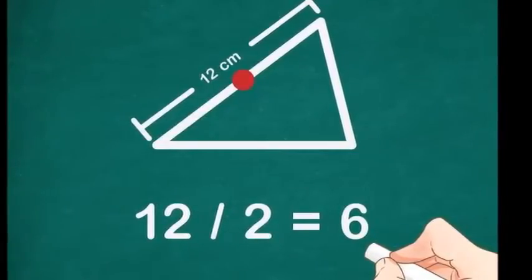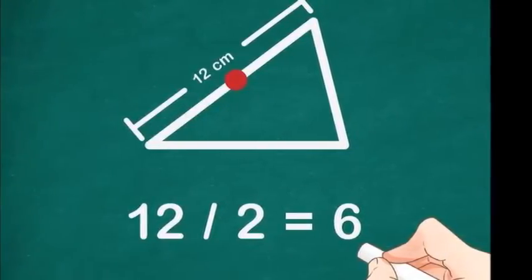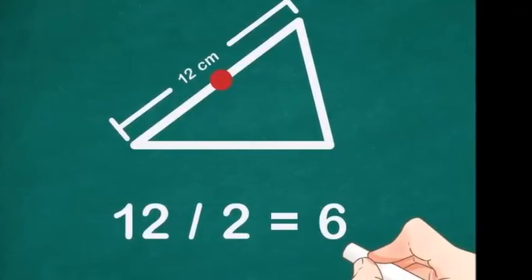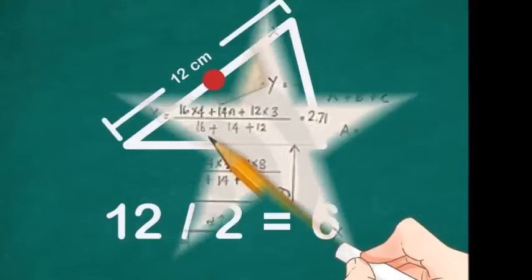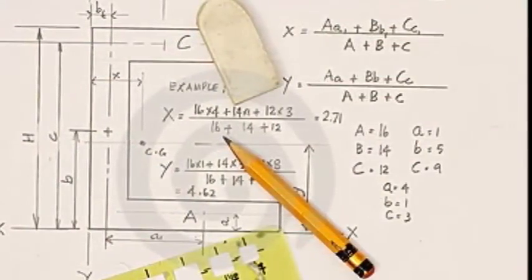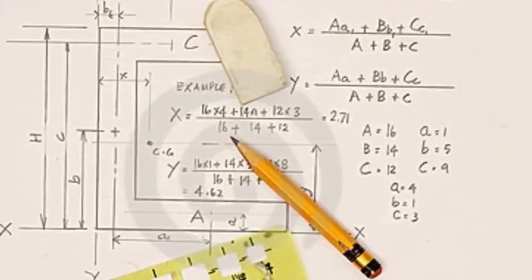Add the weights of all the objects. Find the sum of the weights of the seesaw, the first child, and the second child. To do this, add up the weights: 30 pounds plus 40 pounds plus 60 pounds equals 130 pounds.